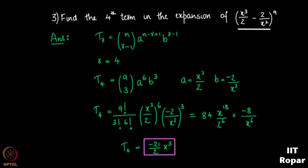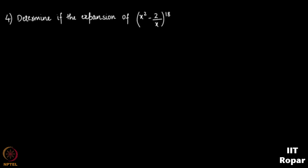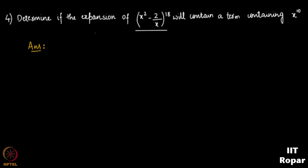Now the next question: determine if the expansion of (x² − 2/x)^18 will contain a term with x^10. This is similar to the previous problem. We write the general term T_r and check if any value of r gives x^10. So T_r must have x^10, meaning x^10 must appear in the expression for T_r.